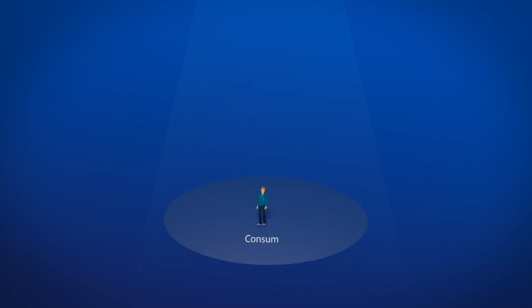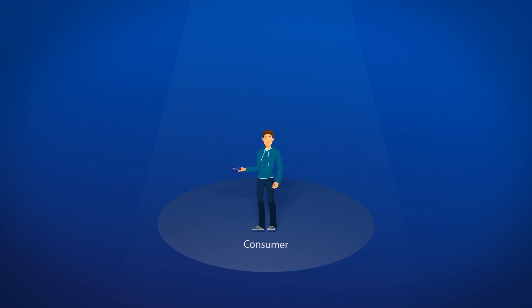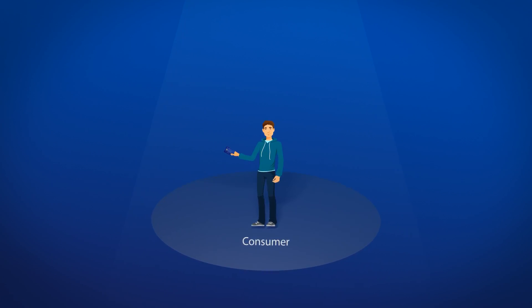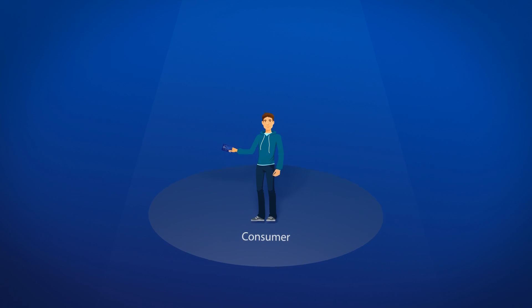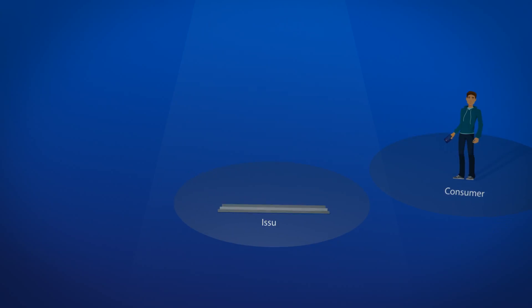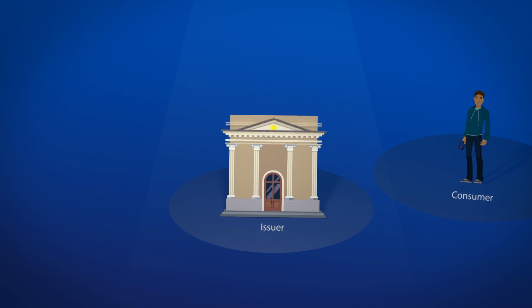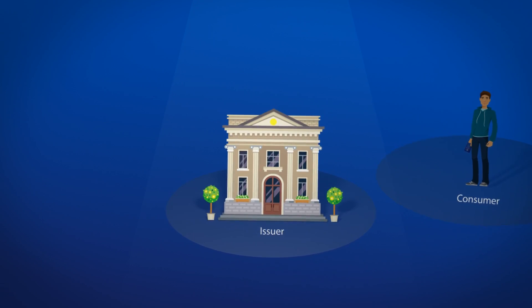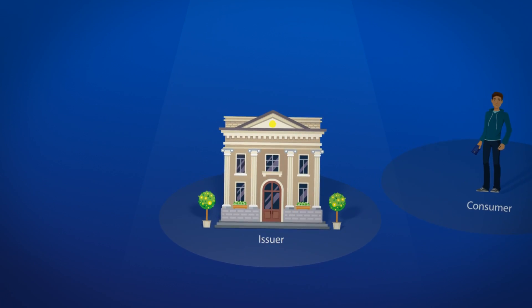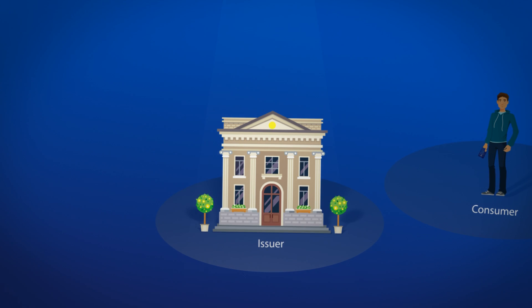Let's start out by taking a look at the cast of players involved in every transaction. Consumers are issued debit or credit cards, which allow them to access their money or credit lines at numerous ATMs and make purchases at millions of merchant acceptance locations around the globe. The consumer's bank that issued the cards is known as the issuer. The issuer will authorize the transaction and guarantee payment on behalf of the consumer.